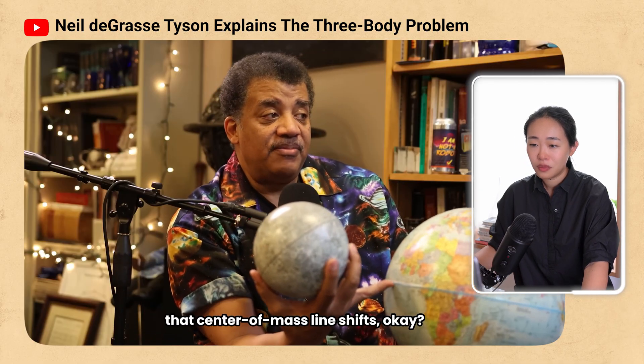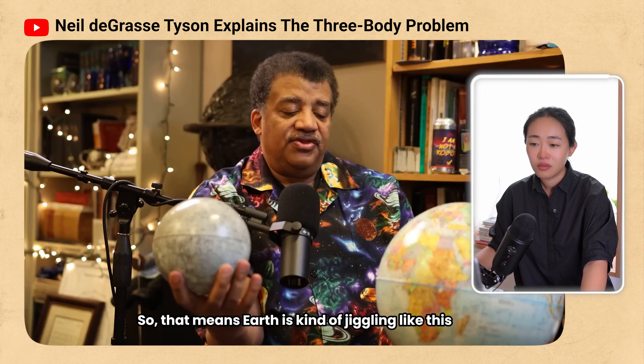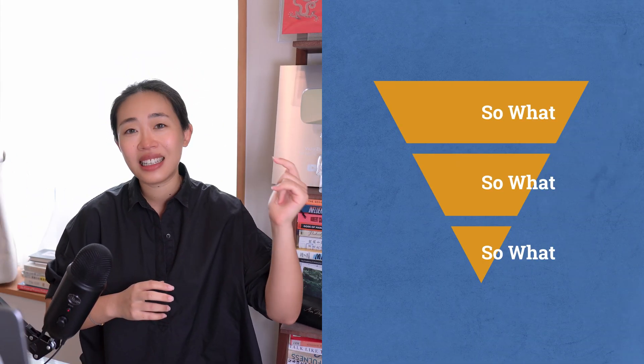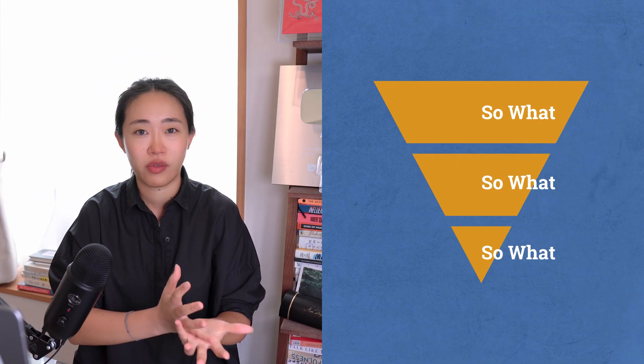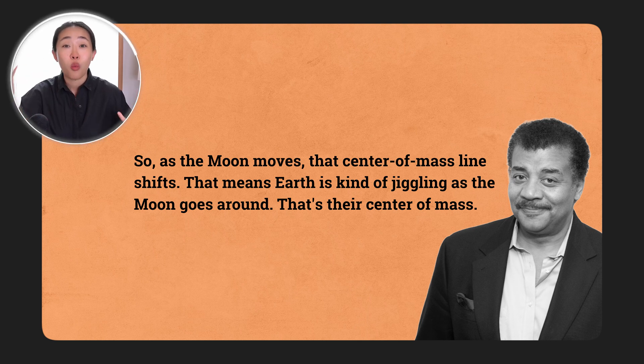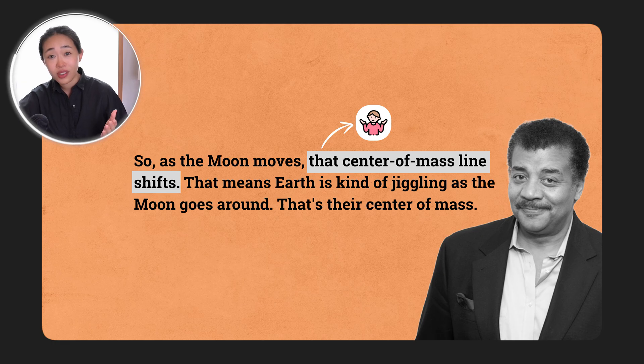All of that happened within the first minute or so — we're already up to about framework seven. Framework eight: spell out the "so what." In consulting, one of the core frameworks is "so what, so what, so what" — you've got to dig at least three levels deep to find real insight. Neil tells you: so what if the moon and earth orbit around the center of mass? What does that mean? He says the center mass line moves — spell it out for the other person. Don't wait for them to reach their own conclusions because they're still processing new information.